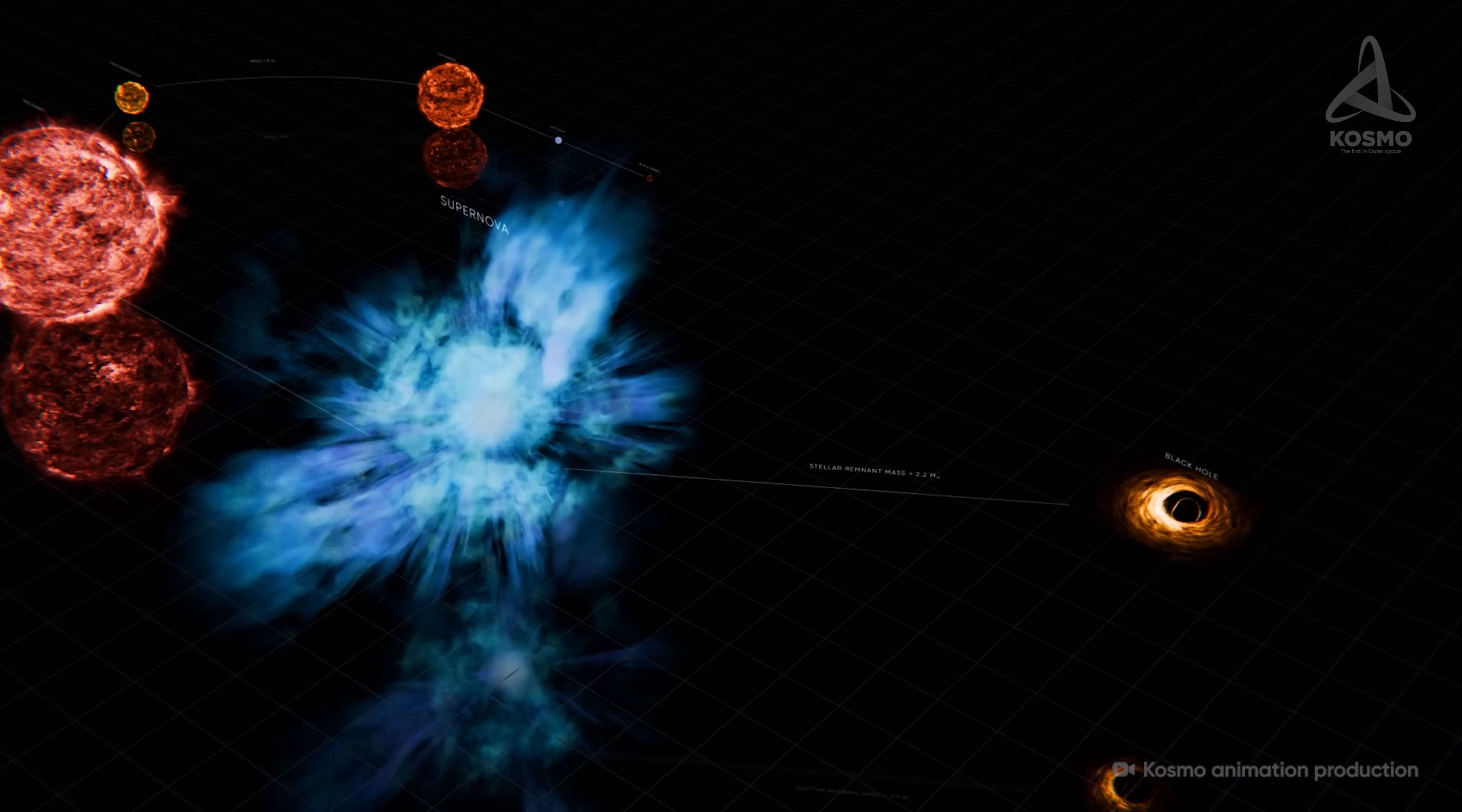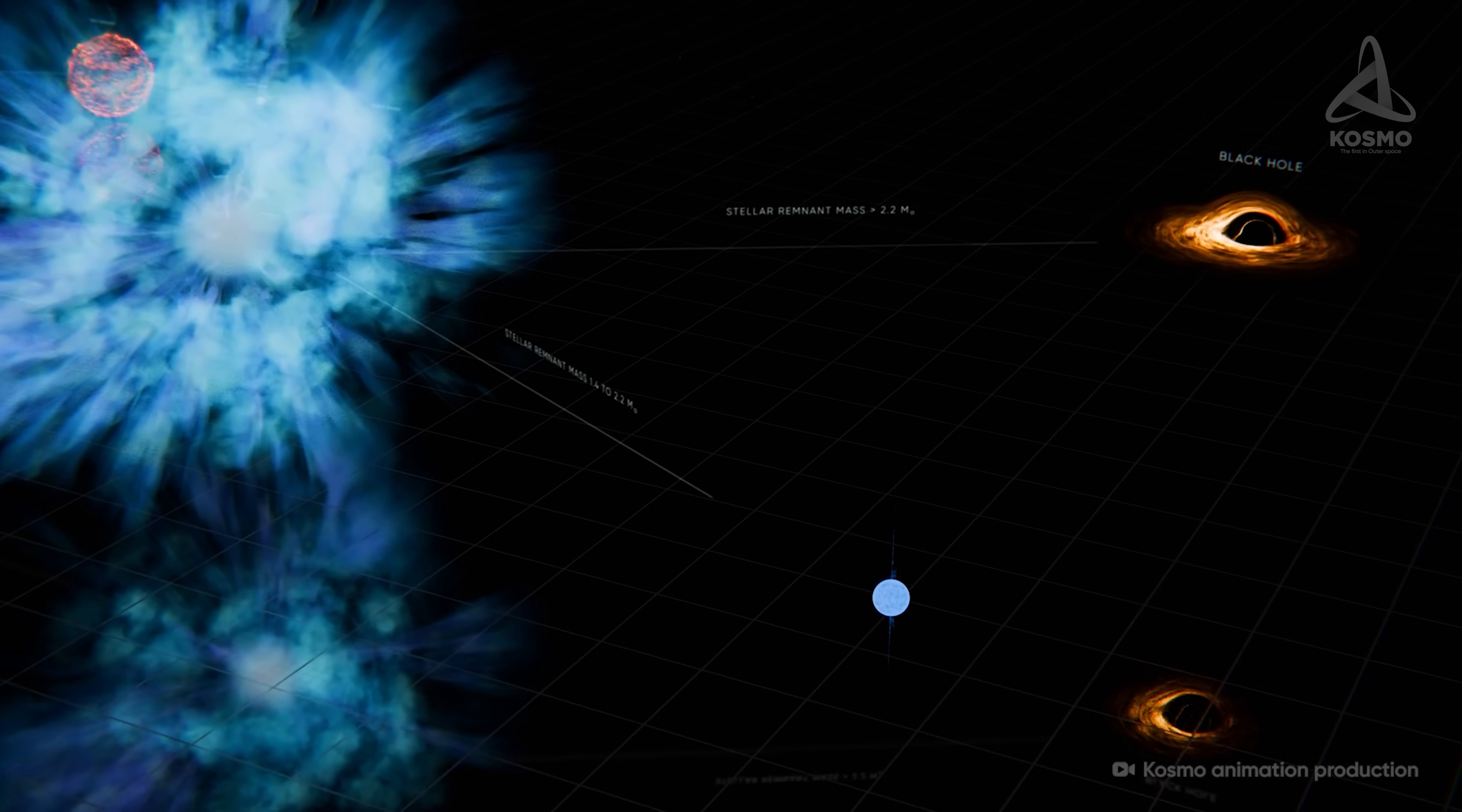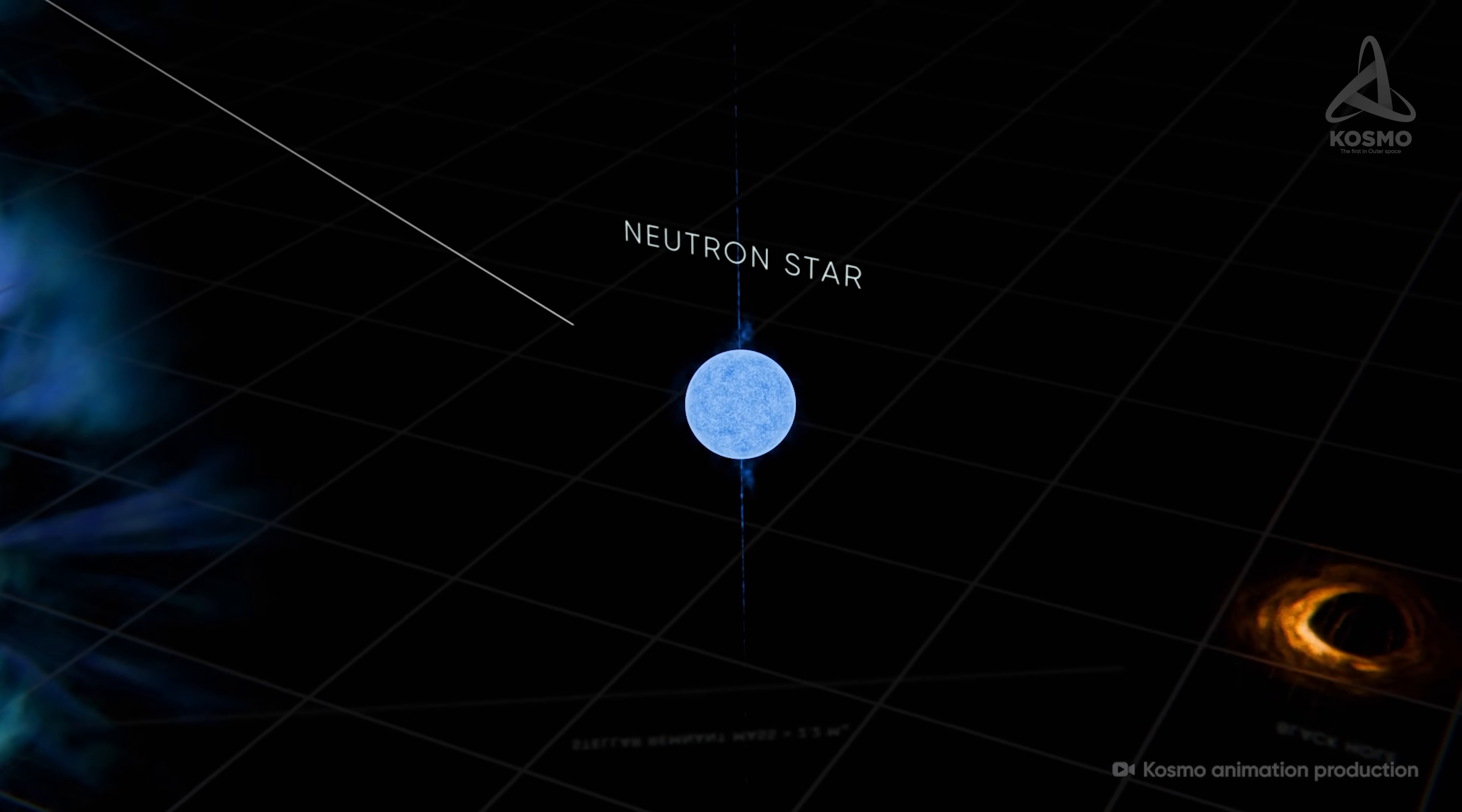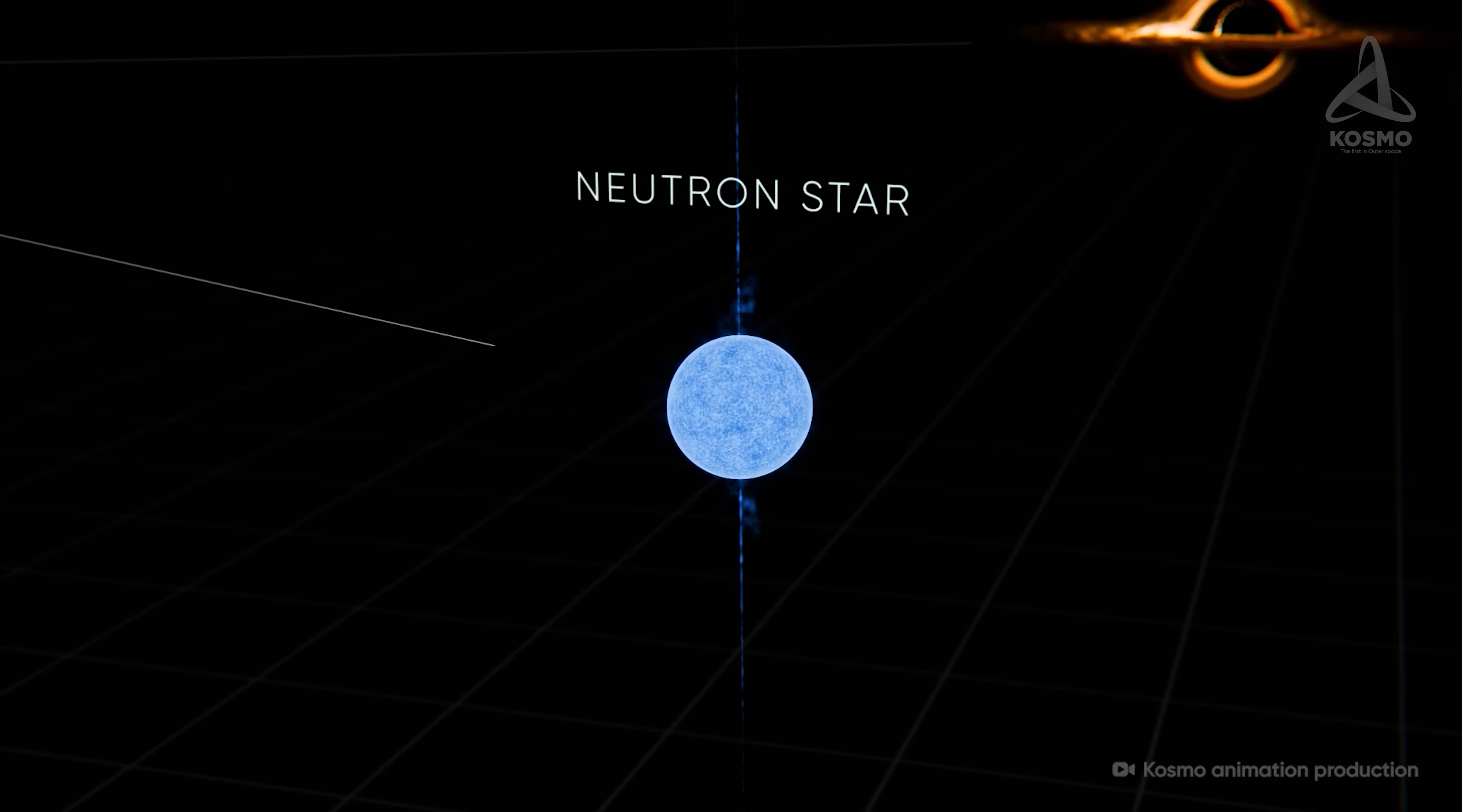However, there is another way. In the case where the mass of the stellar remnant is within the range of 1.4 to 2.2 solar masses, a neutron star is formed. Gravitational forces in its interior destroy atomic nuclei, forming a superdense neutron matter with rather bizarre physical properties.